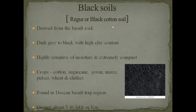The crops grown in black soil are mainly cotton, sugarcane, jowar, maize, pulses, wheat and chilies. These black soils are found in the Deccan Basalt trap region. The regions having black soil are called as Deccan Trap or Deccan Basalt trap. This black soil occupies about 5.46 lakh square kilometres. It is found in the central peninsular plateau, Gujarat, and southern areas.